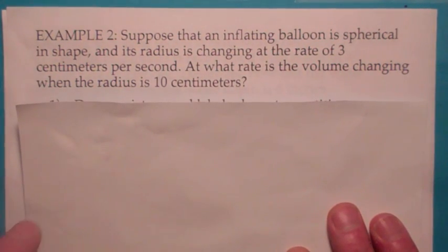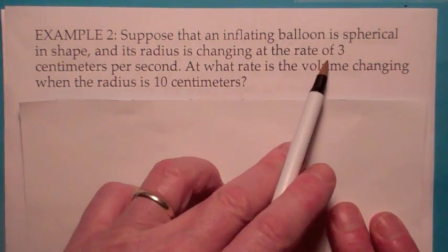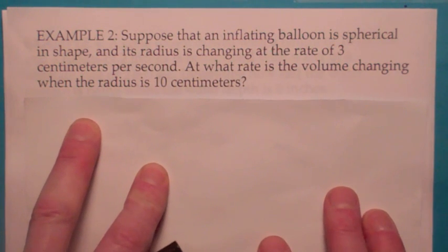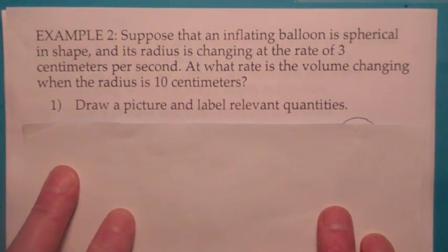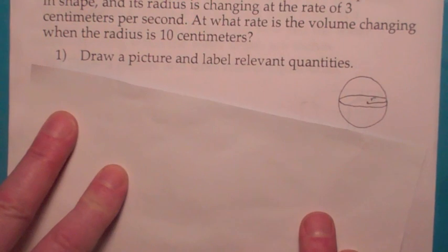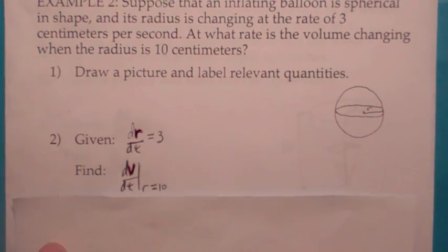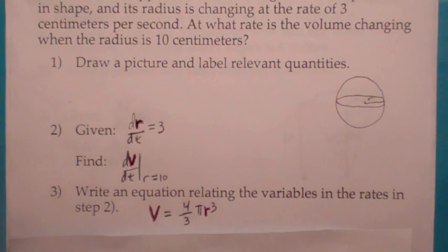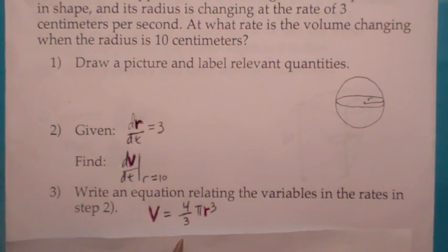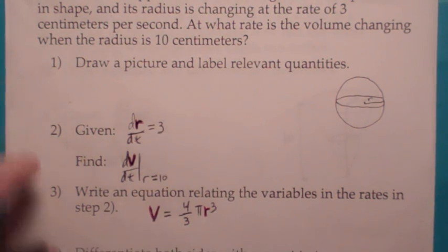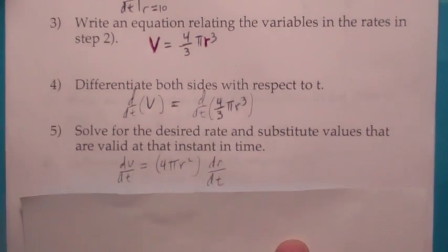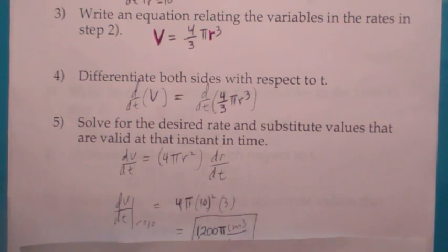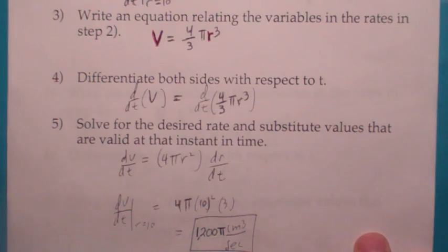This one, you have a spherical balloon that's being blown up. They're giving you the radius is changing at 3 centimeters per second — that's the derivative with respect to t. At what rate is the volume changing when the radius is 10? So they want you to find dV/dt when r equals 10. You're given dr/dt equals 3 and they want dV/dt when r equals 10. You want to find an equation that relates r and V — it's the volume of the sphere. Differentiate both sides with respect to t: you get dV/dt equals 4πr² times dr/dt. Plug in r equals 10, you get 1200π cubic centimeters per second.